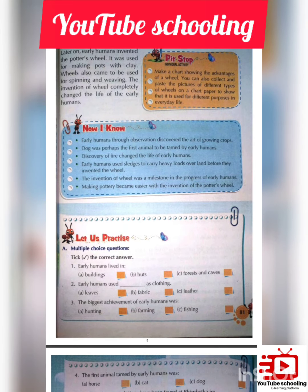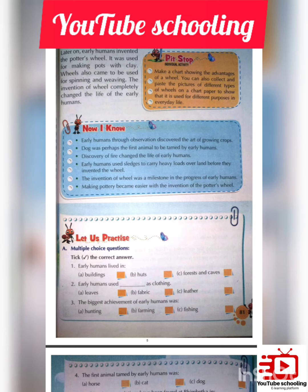Quick Summary: Early humans, through observation, discovered the art of growing crops. The dog was perhaps the first animal to be tamed by early humans. The discovery of fire greatly changed the life of early humans. Before inventing the wheel, early humans used sledges to carry heavy loads over land. The invention of the wheel was a milestone in the progress of early humans. Making pottery also became easier with the invention of the potter's wheel.